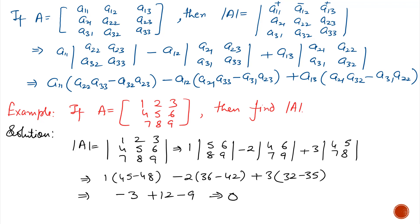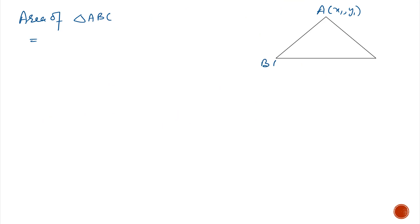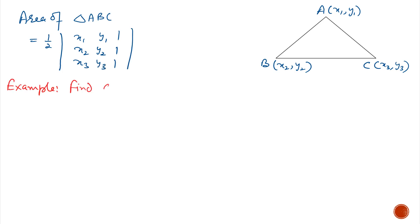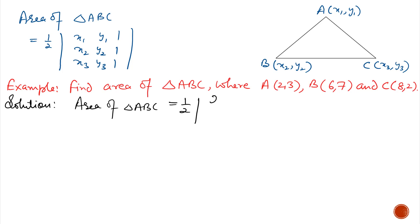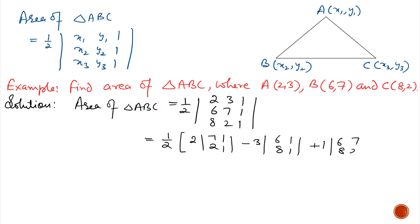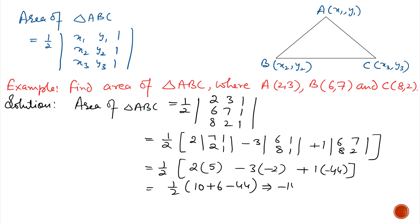Because determinant of A equals 0, A is a singular matrix. The area of triangle ABC where A is (x1, y1), B is (x2, y2) and C is (x3, y3) can be found using the determinant formula. Example: Find the area of triangle ABC where A is (2, 3), B is (6, 7) and C is (8, 2). Using the formula, area equals half the determinant of [2, 3, 1; 6, 7, 1; 8, 2, 1]. After calculation: half of (2·5 − 3·(−2) + 1·(−44)) = −14. Since area cannot be negative, the area is 14 square units.